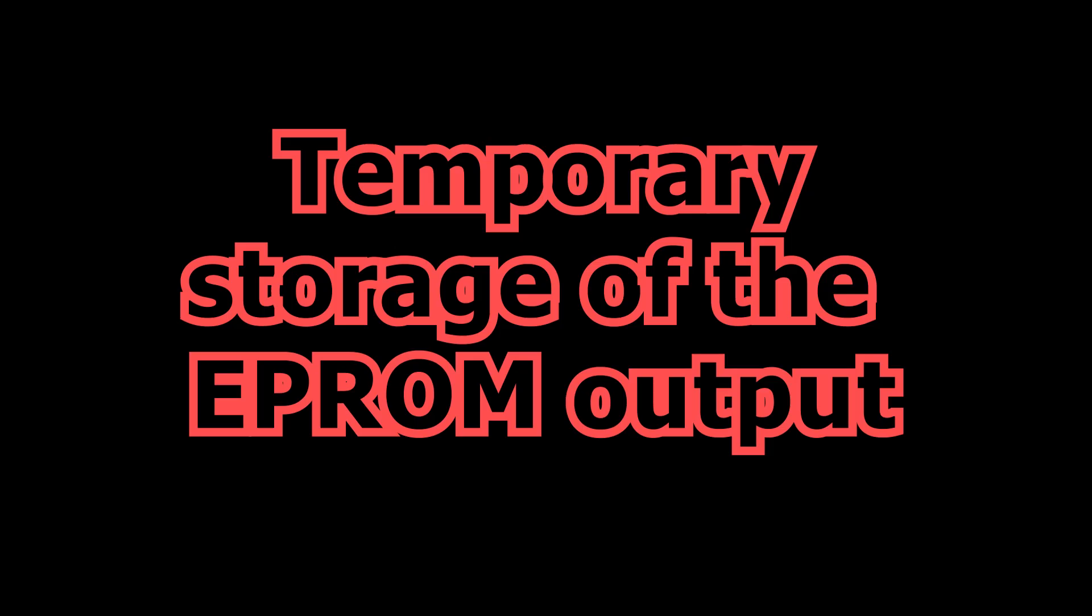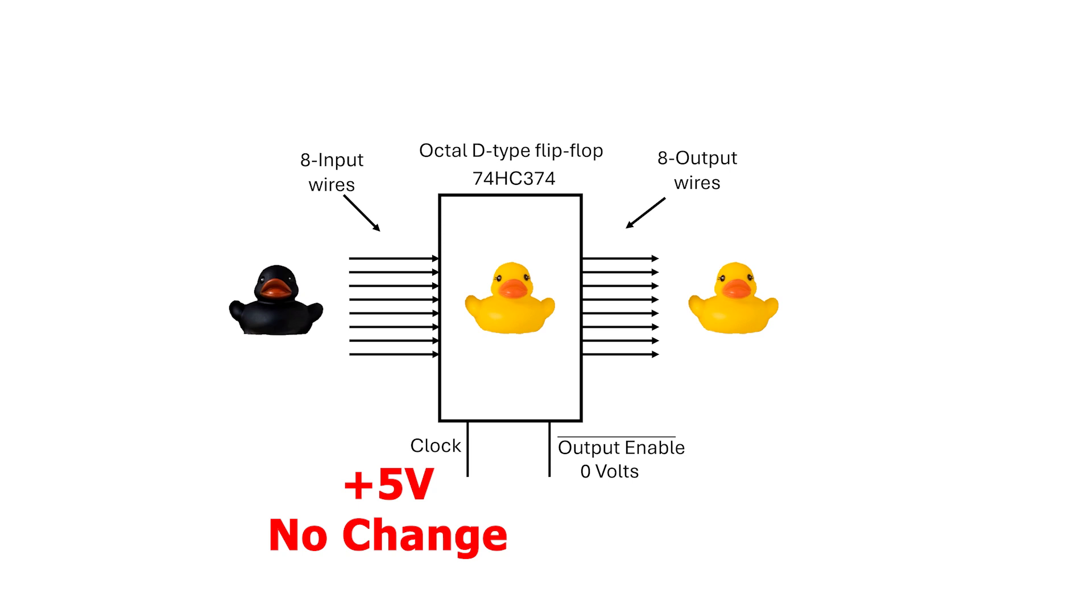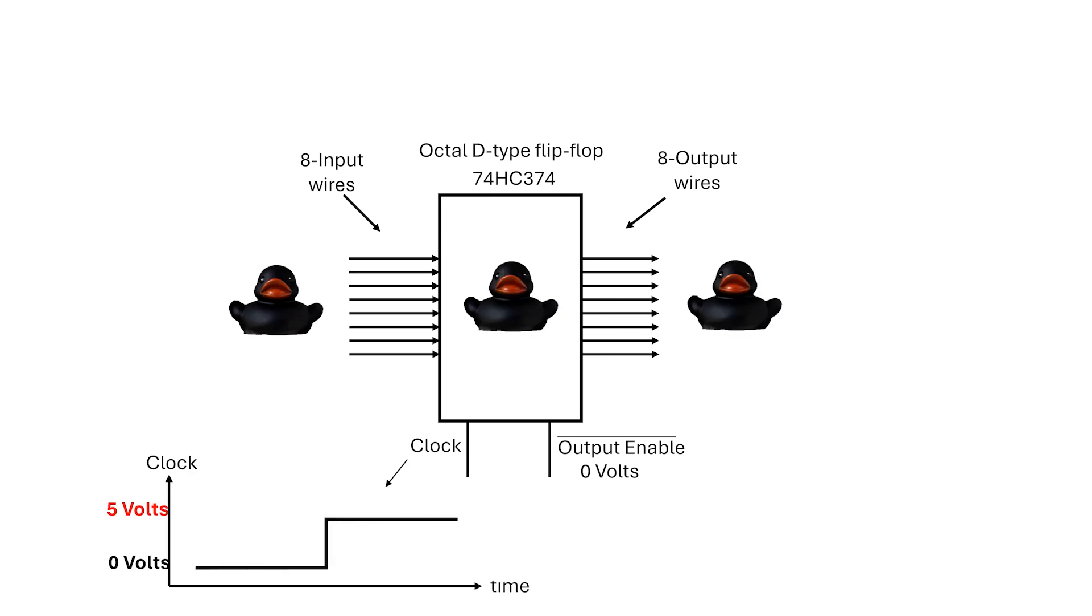We can use the EEPROMs to store the information, but once we have looked up a rule, we need to store the result temporarily, because it tells us which rule to use next. To do that, we use an Octal-D type flip-flop. You can think of it as a single memory cell that holds a value until we decide to update it. This particular chip, the 74HC574, has 8 input wires, 8 output wires, and 1 clock input. Here's how it works. When the clock input is high, it doesn't matter what's on the inputs, the stored value doesn't change. When the clock is low, again, the stored value doesn't change. So what gives? How does it actually store a value? The key is what happens at the exact moment when the clock transitions from low to high. Whatever data is on the inputs at that instant gets captured, stored inside the flip-flops, and then presented on the outputs.